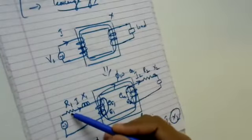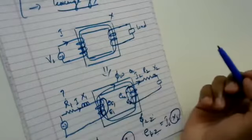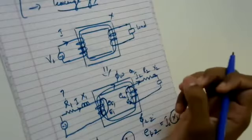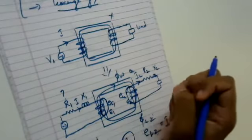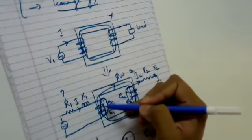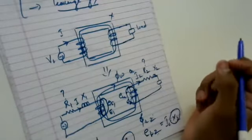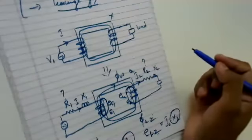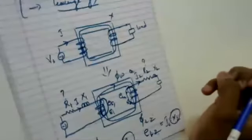Why are you writing R1 on the primary side? What is this indicating? The answer is: R1 indicates the internal resistance of the primary winding. What about R2? R2 indicates the internal resistance of the secondary winding.